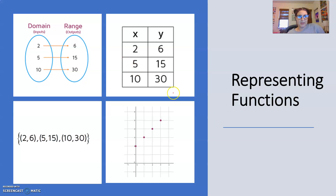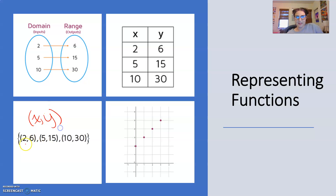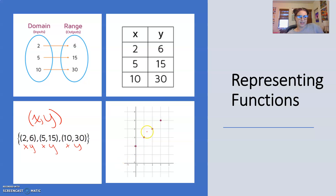Let's look at the different ways we can represent functions. We're going to start with mapping diagrams. We might also see the same information as a table of x and y input and output values. We can have ordered pairs — in the form x comma y — and you can see they match the table. We'll also see functions as graphs, either as individual points or as continuous lines.